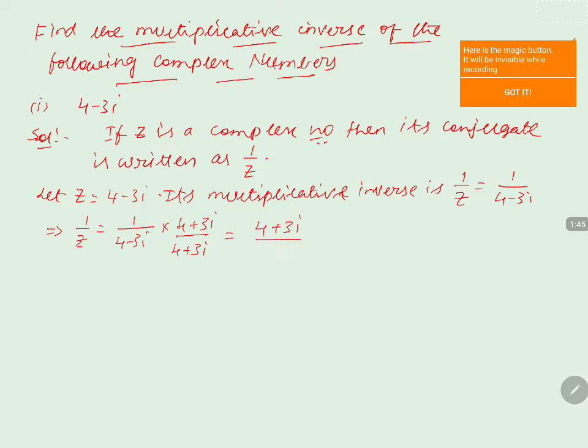The denominator is in the form of a minus b into a plus b. So we will write it as a square minus b square. That equals 4 square minus 3i whole square.